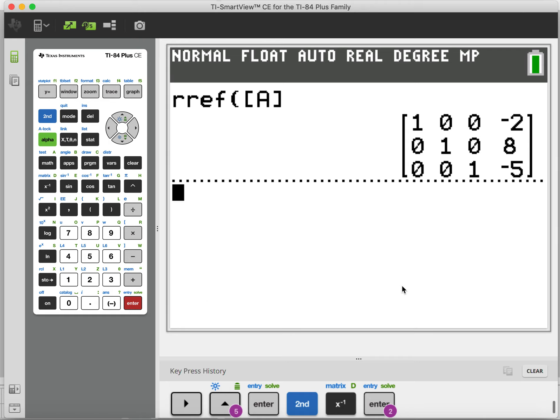This looks great. I know this is in reduced row echelon form because this part right here is my identity matrix for a three by three. So that's good. And then right here, negative two, eight, and negative five are my solution.